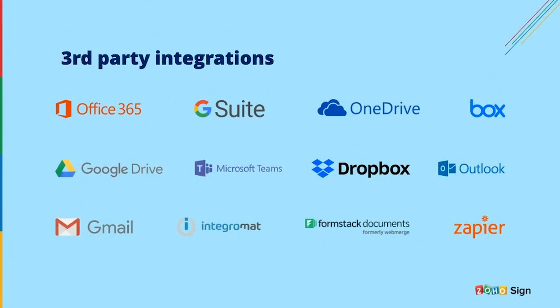Coming to third-party integrations, Zoho Sign integrates with major ecosystems including Office 365 and G Suite, and has standalone integrations with cloud storage solutions like OneDrive, Google Drive, Box, and Dropbox. We've recently introduced integrations with Microsoft Teams and inbox integrations with Outlook and Gmail. We also integrate with platforms like Integromat, Zapier, and Formstack Documents, which help you connect Zoho Sign to thousands of other web applications to build automated workflows.